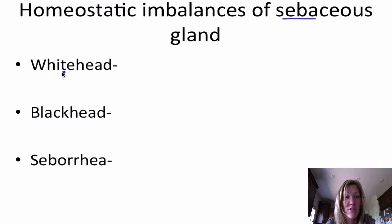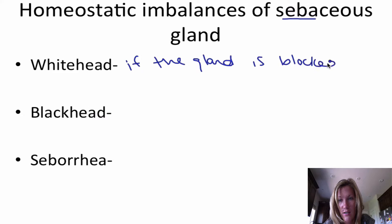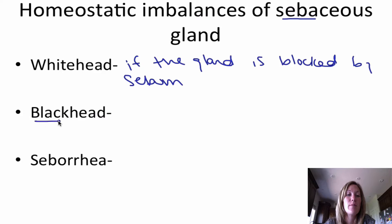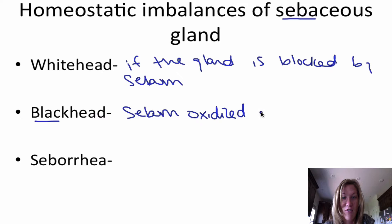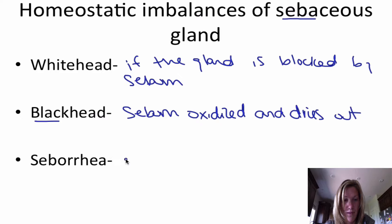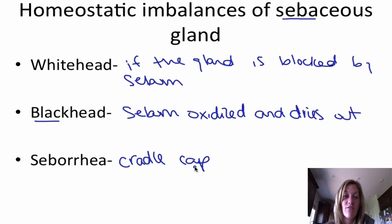Let's go through a couple of homeostatic imbalances of the sebaceous glands. First, we have whiteheads, which appear when the gland is blocked by sebum. A blackhead, on the other hand, occurs when the sebum is oxidized and dries out. Seborrhea, also called cradle cap, is similar to dandruff but not quite — it's very common in infants and involves flaking skin.